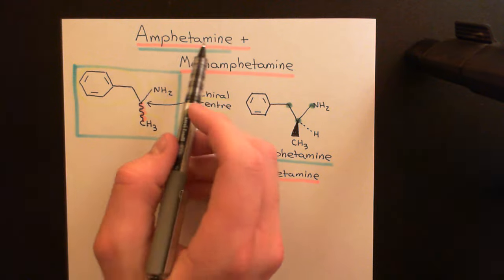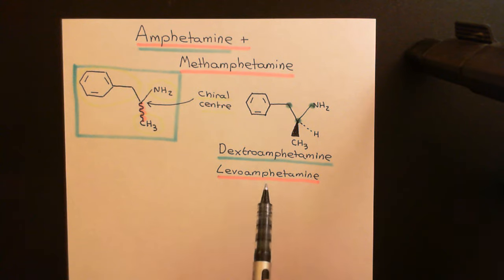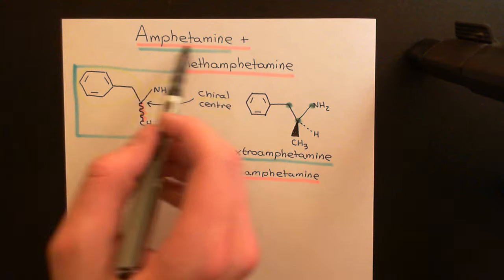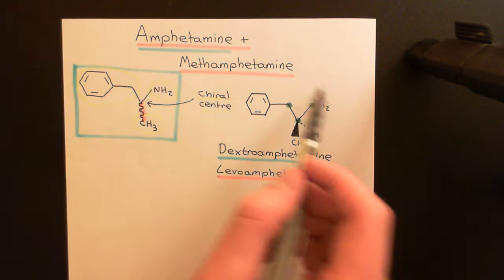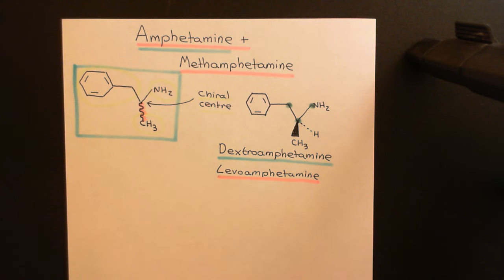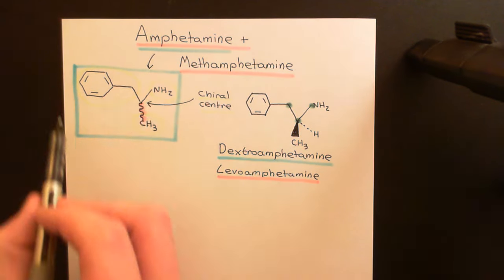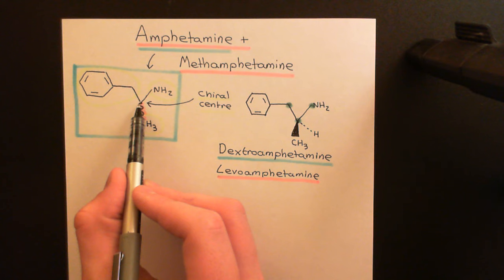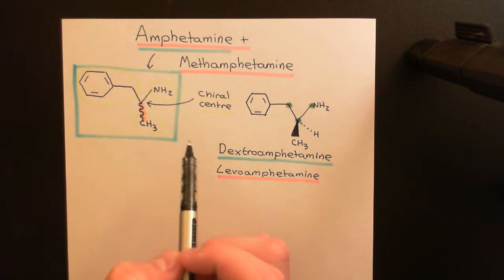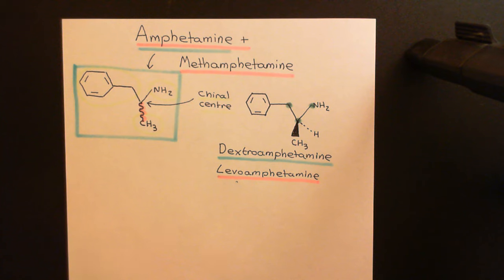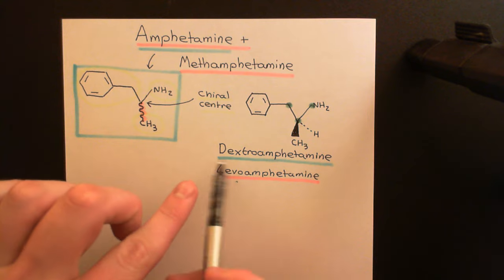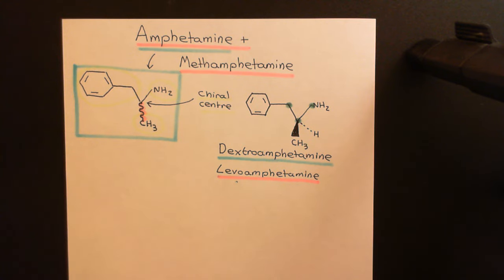If someone says they are taking amphetamine, what they mean is they are taking a mixture of both dextroamphetamine and levoamphetamine — that is the definition of what is meant by amphetamine. That's why when asked to draw the amphetamine structure you draw the diagram with the squiggly line, meaning it can go in either direction, because this truly is a mixture of both optical isomers. If someone says they are taking dextroamphetamine, they mean they are specifically taking just that one form — 100% that optical isomer, the more active one.